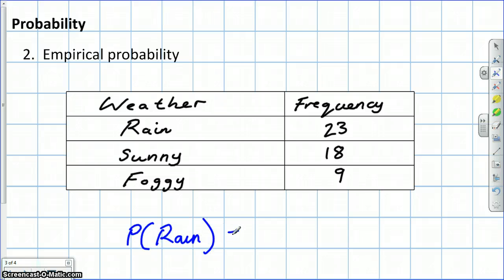What's the probability of rain? Well, here we look at the outcomes that were rain over the total number of outcomes we observed, which was 50. So the probability of rain is 23 out of a total of 50.